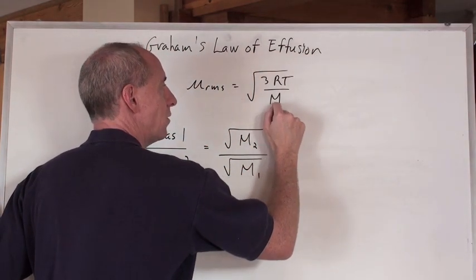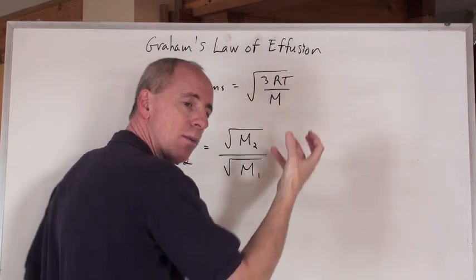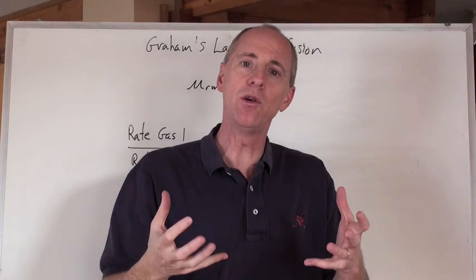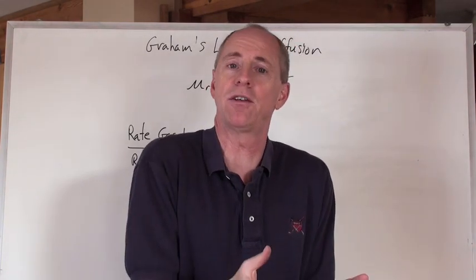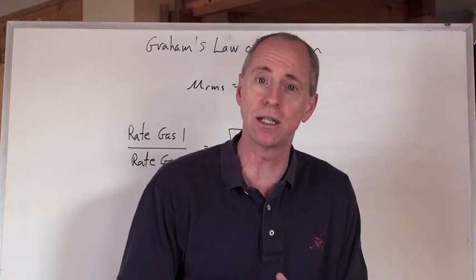So if you think about it, the larger the molar mass is, divided into this here gives you a smaller number. The bigger you are as a gas particle, the slower that you go compared to something that's a little bit lighter in terms of its molar mass, it whips around a little bit quicker.